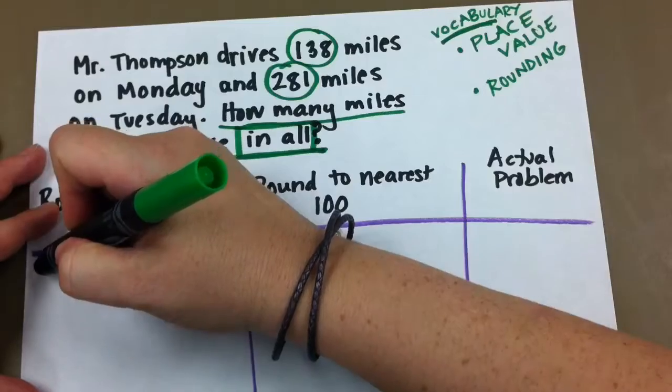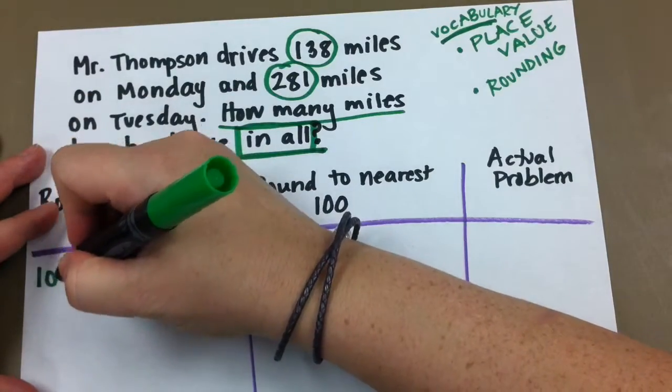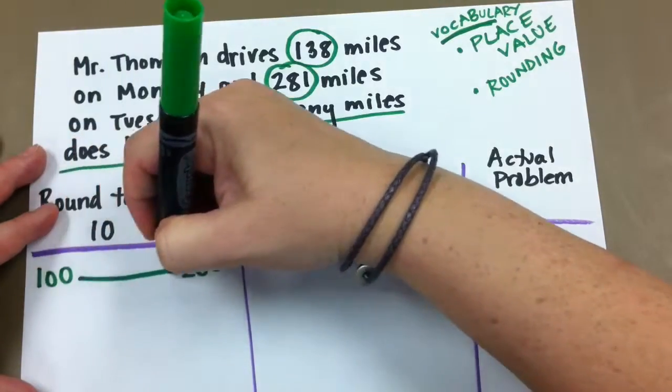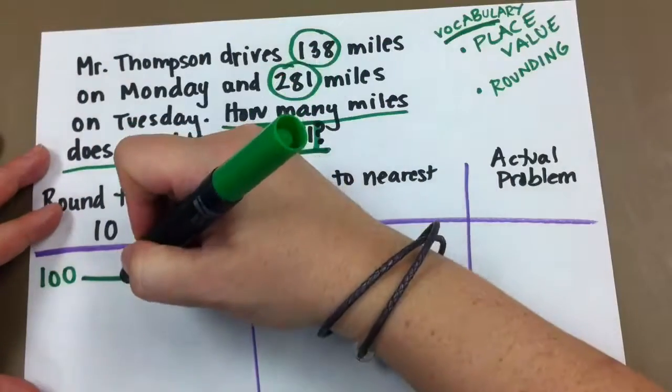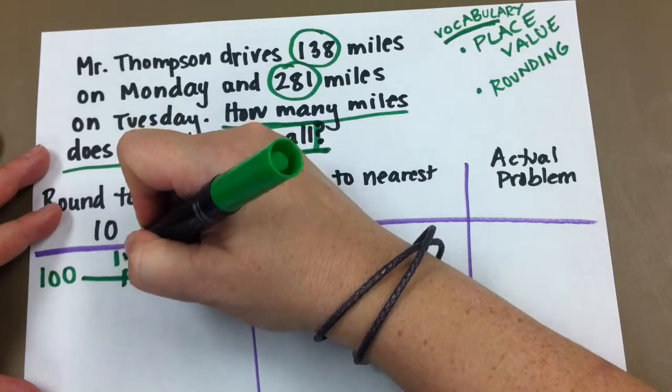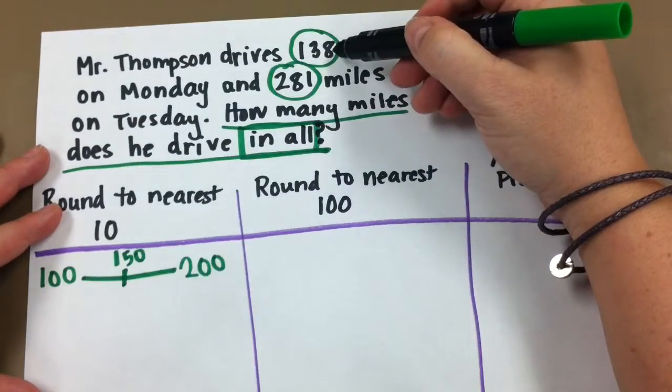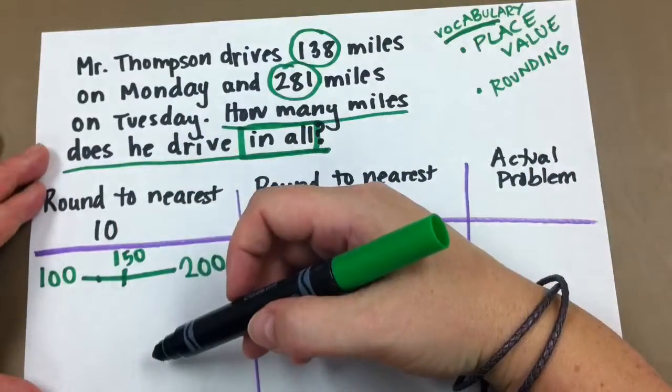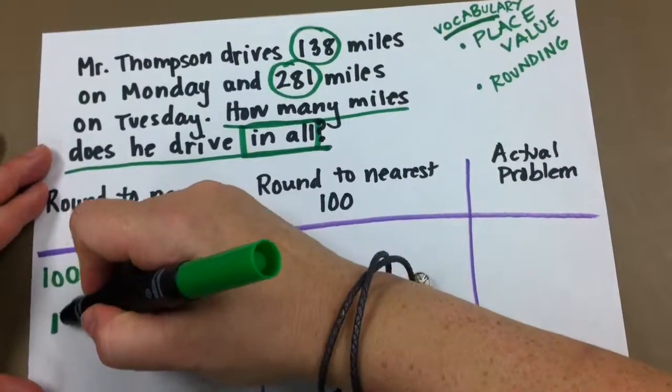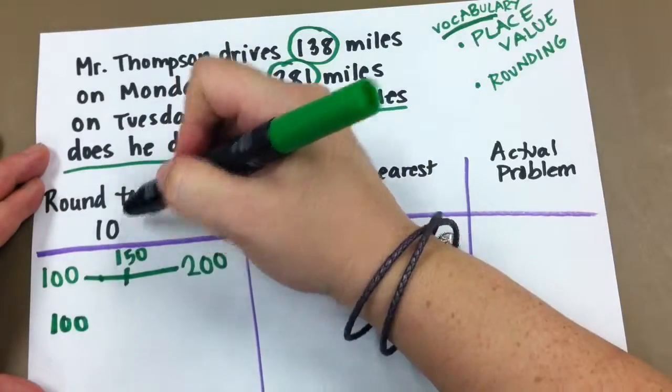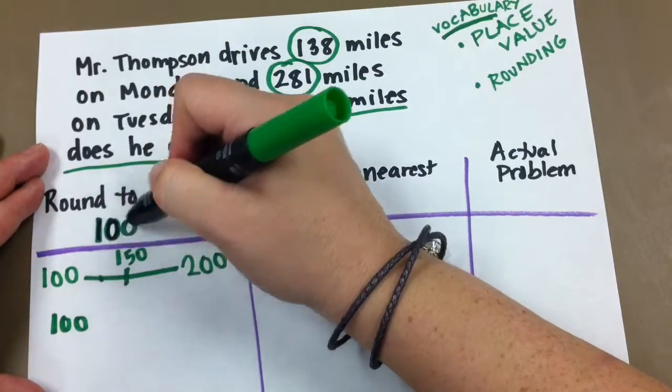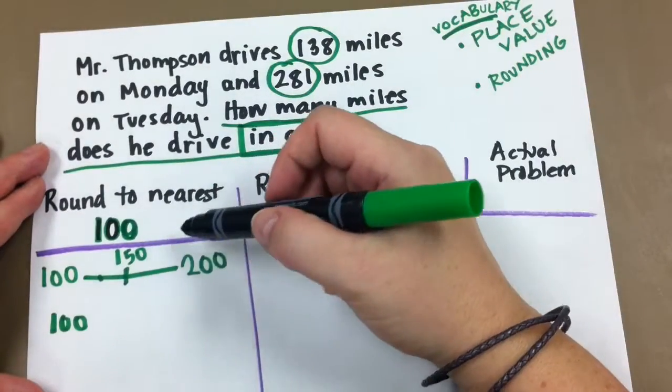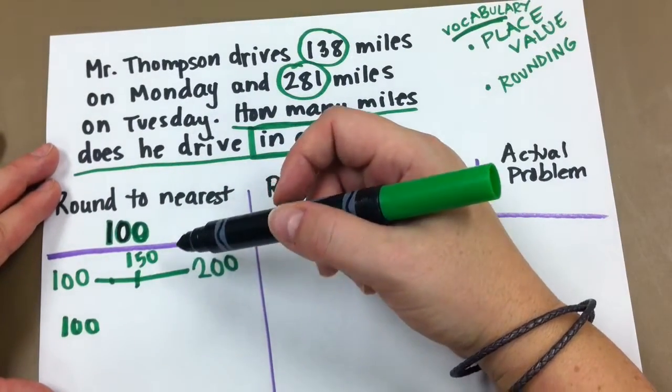138. I know that is in between. Can you think of it? 100 and 200. Boys and girls, what is in between 100 and 200? That's right, 150. Now 138, where does that fall? It's over here somewhere, so it is closer to 100. And I've just made a mistake. Here, we should be rounding to the nearest 10, but we're actually rounding to the nearest 100. So we'll keep going with this. Okay, so now let's see.